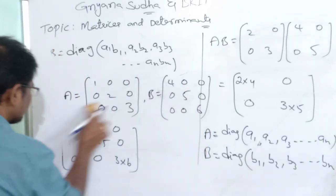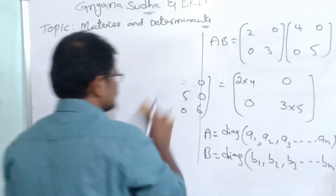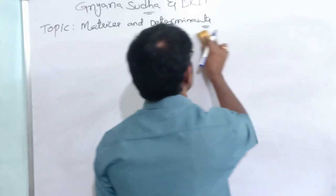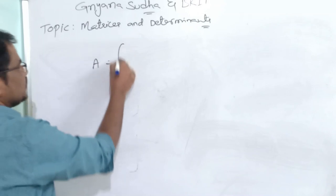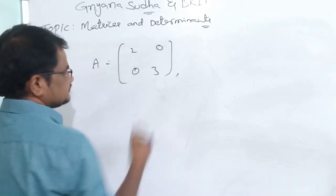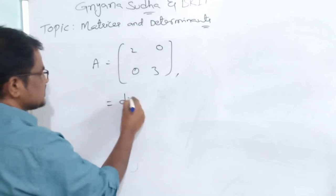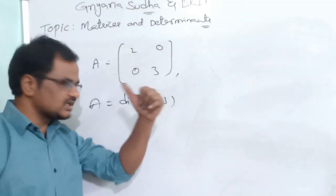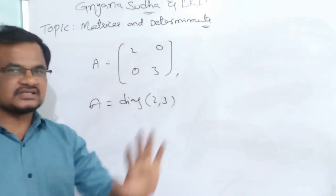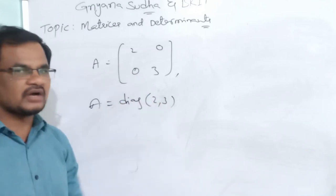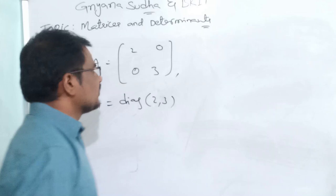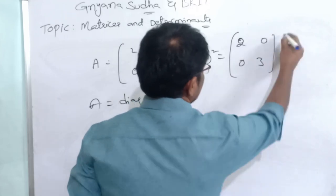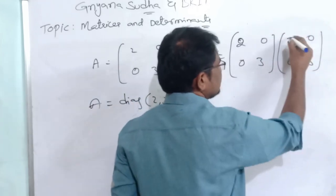Next note: if A = diag(2,3), then A² = diag(2,3) × diag(2,3). Multiplying: first row with first column gives 2², second row with second column gives 3², remaining entries zero. So A² = diag(2², 3²). This generalizes: if A = diag(D1, D2, ..., Dn), then A^N = diag(D1^N, D2^N, ..., Dn^N) for positive integer N.